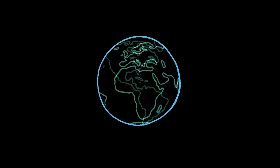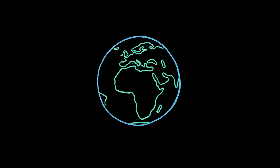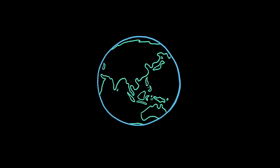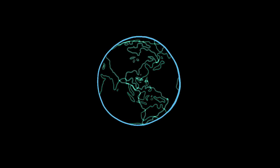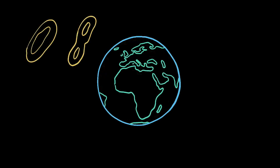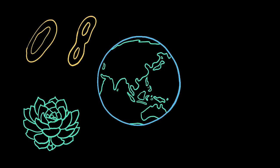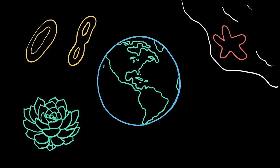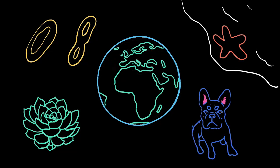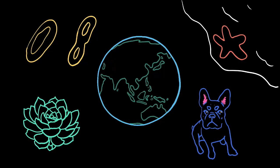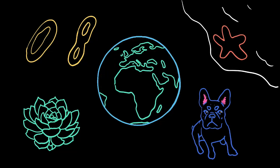The planet we live on is full of life and has been for billions of years. Living things on Earth have existed for as long as they have because life found a way to create life. To put it another way, living things found ways to reproduce, creating offspring that can then go on to reproduce themselves.